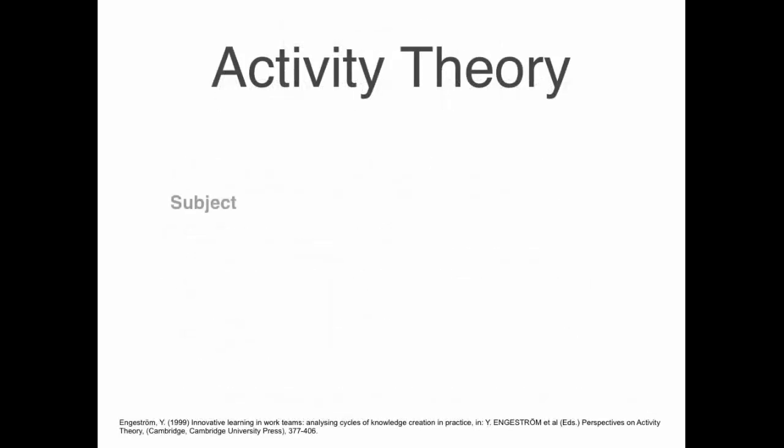Hence, activity theory starts with the subject who interacts with the object and both the subject and the object have a relationship to a community. The community defines how the objects are used and the functions of individuals.